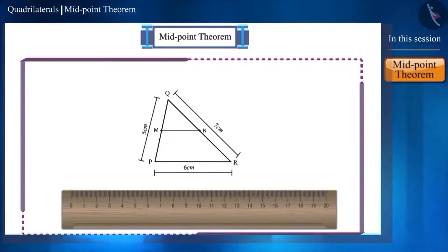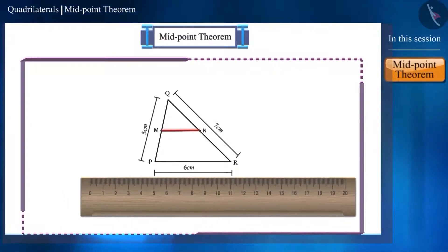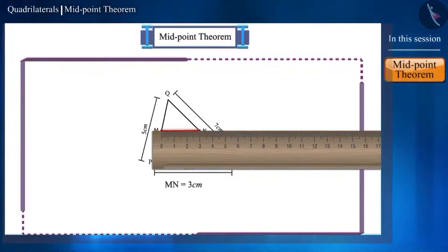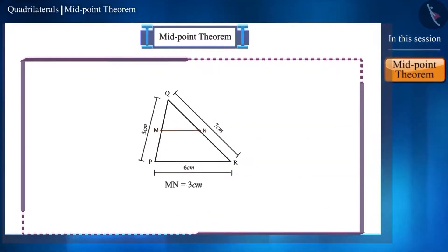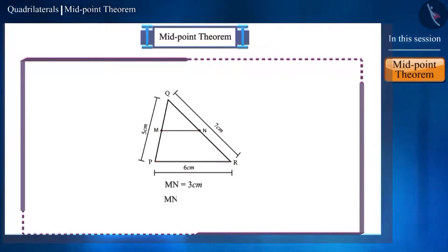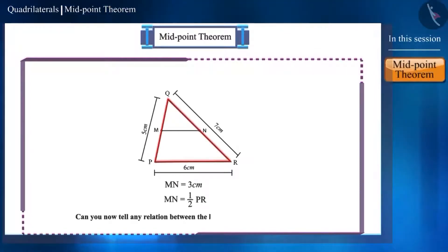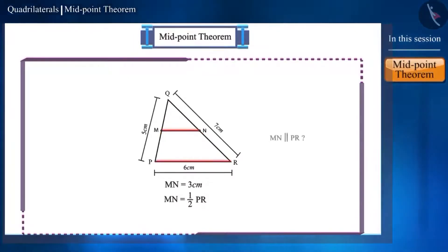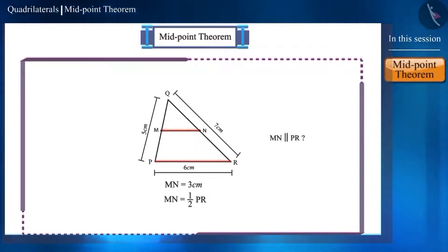With the help of a scale, find the length of line segment MN. The length of MN is 3 cm, which is half the length of side PR. Looking at the figure, both these lines seem to be parallel. We can test this by finding the measurements of angle QMN and angle MPR with a protractor. The measurement of these two angles is equal. These are corresponding angles formed by the intersection of MN and PR with transversal PQ, so by the converse of the corresponding angles axiom, MN and PR are parallel.